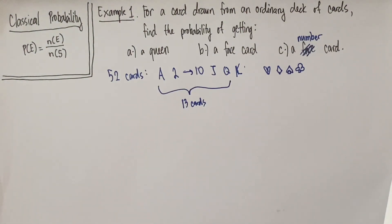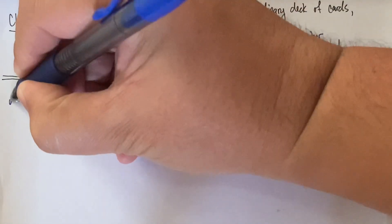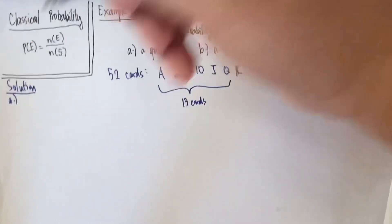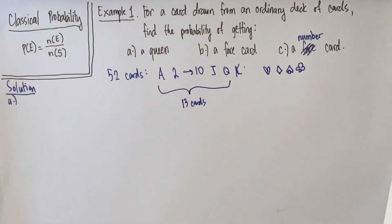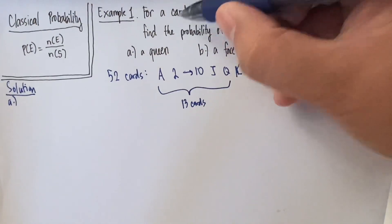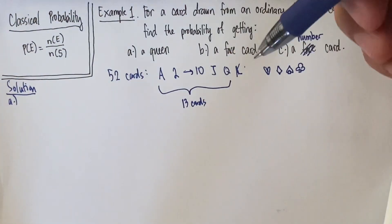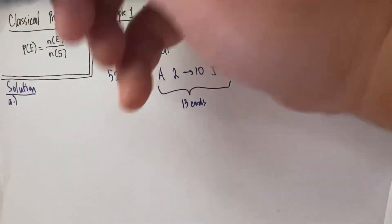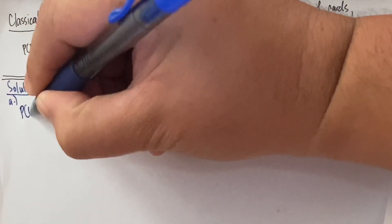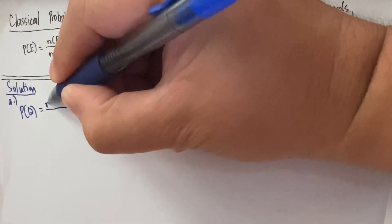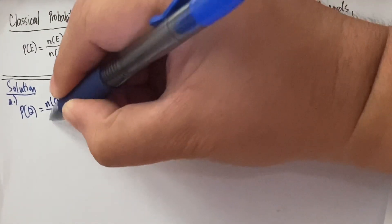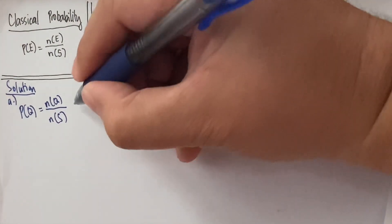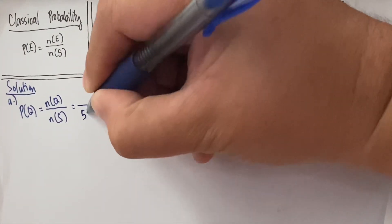So let's find a solution for example 1. For a solution for A, we are asked to find the probability of getting a queen if we're going to get a single card there. So we need to first count. Since we want the set E to be the queen, we can write it as the probability of getting a queen is equal to how many queens there are in our ordinary deck of cards divided by the total number of the ordinary deck of cards. So we know that 52 is our denominator here.